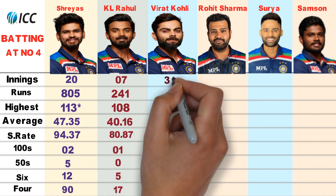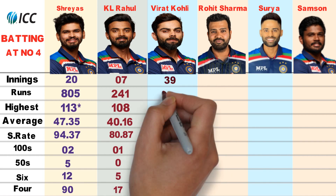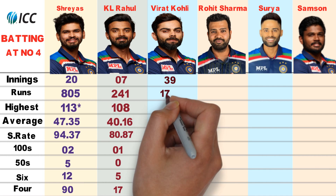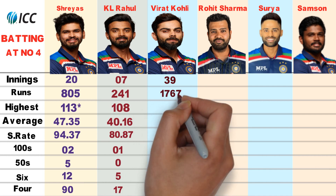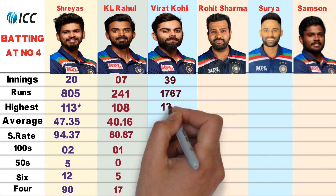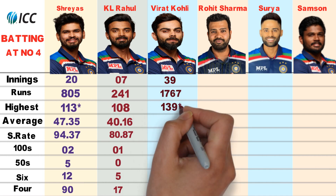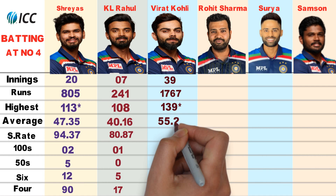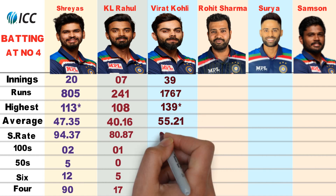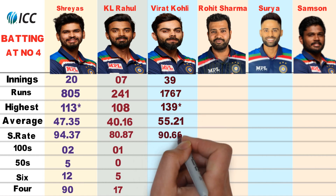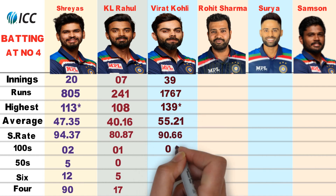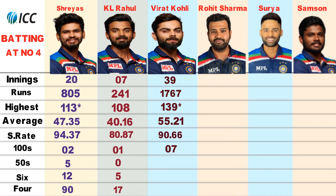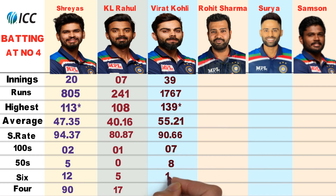Virat Kohli played 39 innings, scoring 1767 runs with a highest score of 139 not out. Batting average 55.21, strike rate 90.66. He scored 7 centuries and 8 half centuries, with 15 sixes and 162 fours.